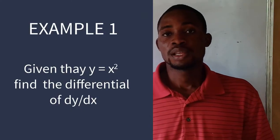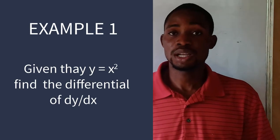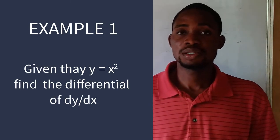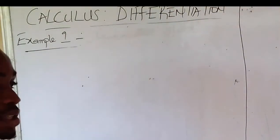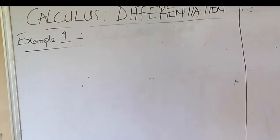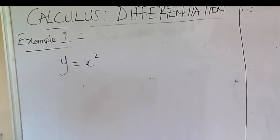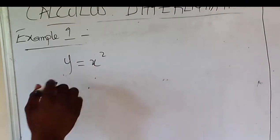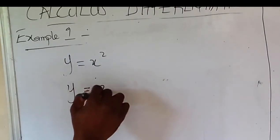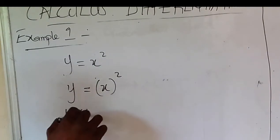Example one: given that y equals x squared, find the differential of y with respect to x. We apply the steps listed earlier. The first thing is to add the increment of y to y and the increment of x to x, which gives: y plus δy equals x plus δx, all squared.